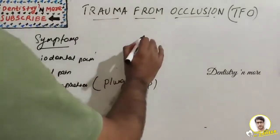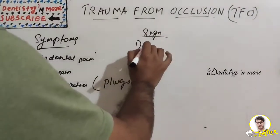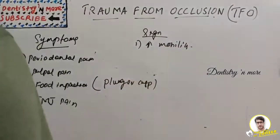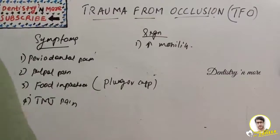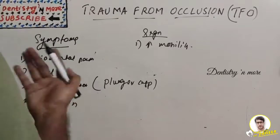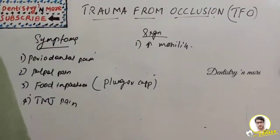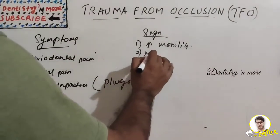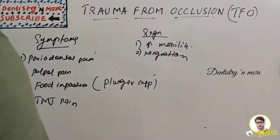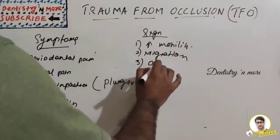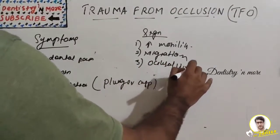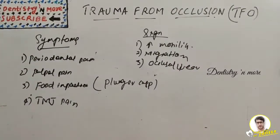Signs of TFO include increased mobility, which is the hallmark of trauma from occlusion. It is measured by placing the blunt ends of two instruments at buccal and lingual heights of contour and applying force in the buccolingual direction, or using the Miller's Mobility Index (grades 1, 2, and 3). Migration of teeth occurs due to loss of interproximal contact. A typical pattern of occlusal wear is present — tooth wear appearing greater than expected for the patient's age, not attributable to special diet or deficiency in tooth mineralization.